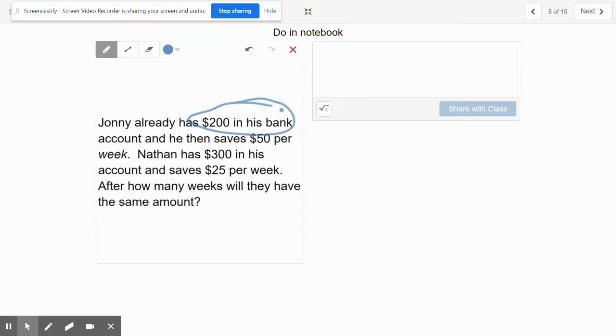All right, you guys know what to do here. Don't mess this up. All right, it's a system. Set it up properly. If you forgot how to set it up, it's fifty per week plus two hundred equals twenty-five per week plus three hundred, and you would solve that system.